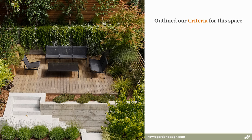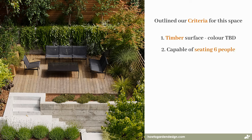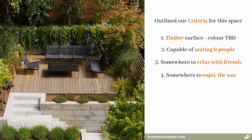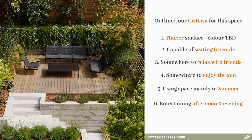So, we've now outlined our criteria for this space. We have a tipped surface, the colours to be determined — we'll draw on other parts of the design and house to determine exactly how this material can look. There's a space capable of seating about six people, somewhere they can relax, have some drinks, chat, and some nibbles and food. Somewhere to enjoy some sun and read a book. And they're using the area mainly in summer, and most likely entertaining in the afternoon and evening.